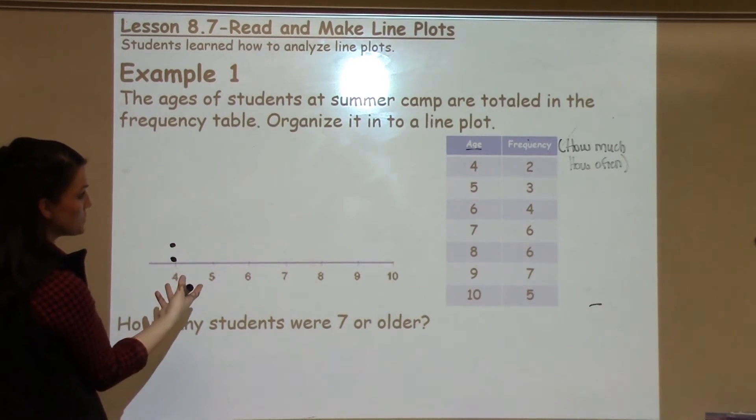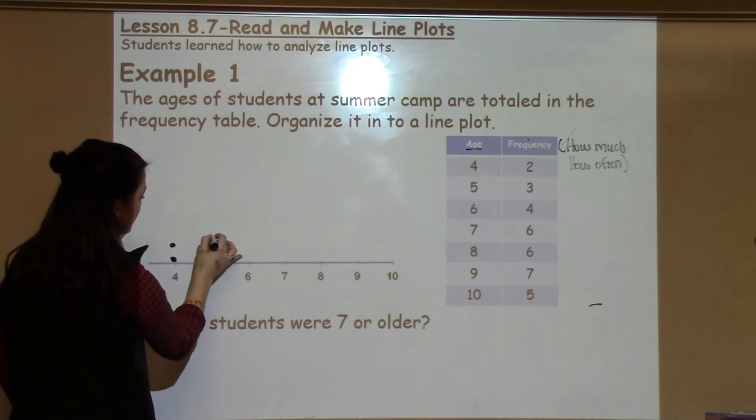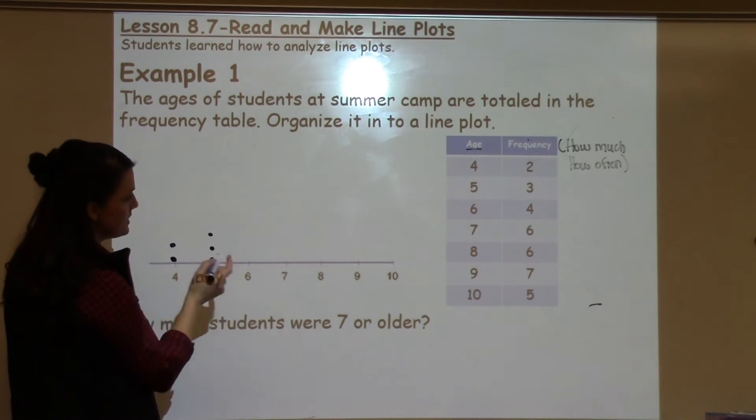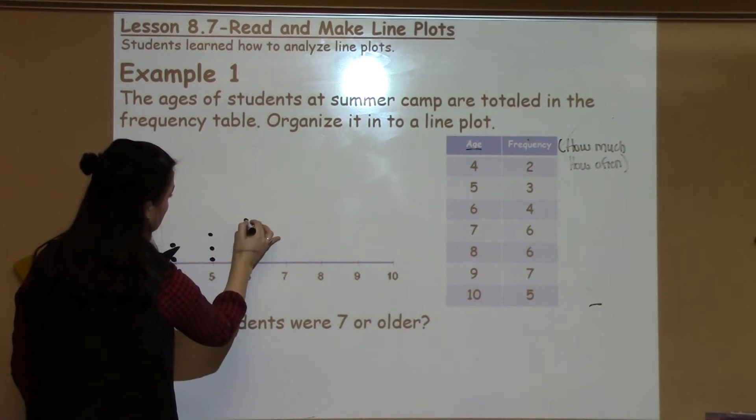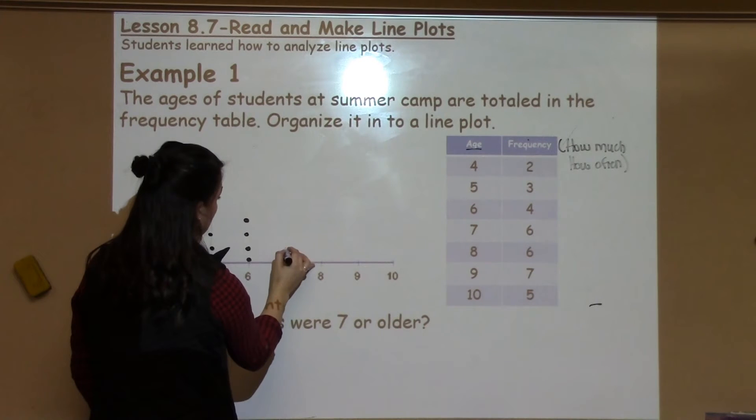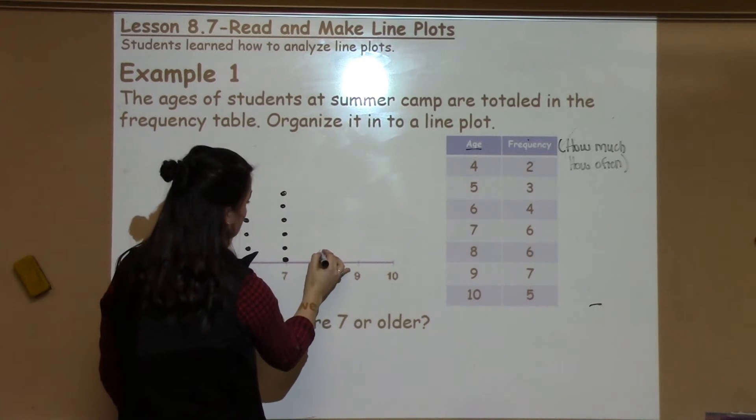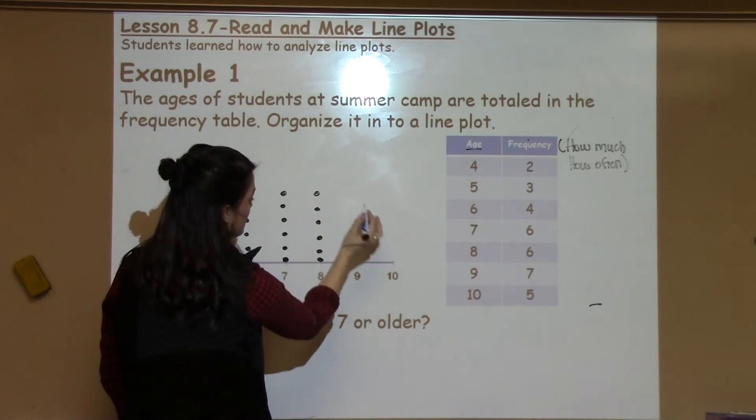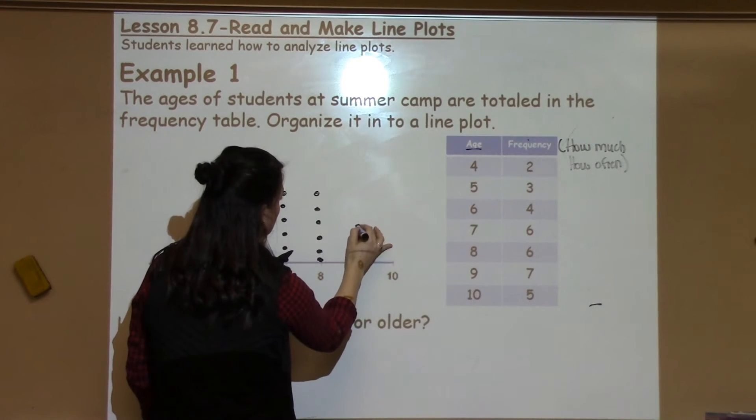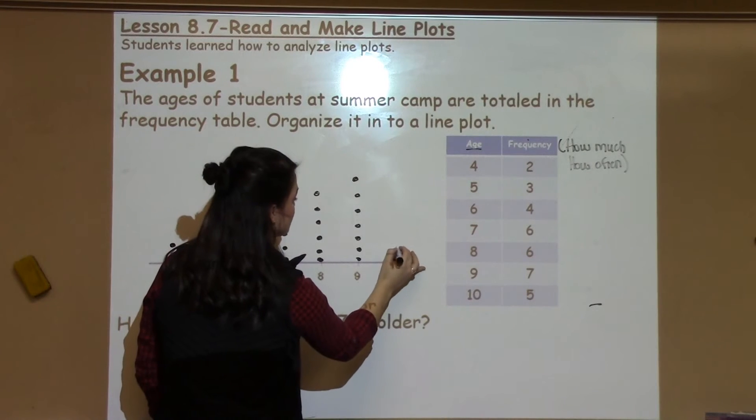I have three for five, so I'm going to plot three points on five, four for six, six for seven, six for eight, seven for nine, and five for ten.